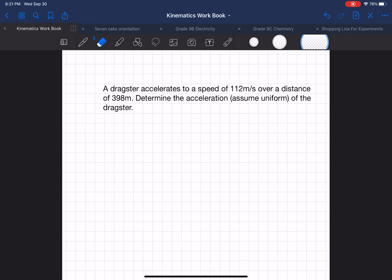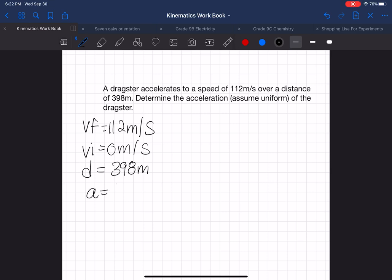The first thing whenever I get a question like this and I want to know which formula I can use, I want to write out all the components that I have or whatever I for sure have for values. So I know that the dragster accelerated to a speed of 112, so that's their final speed, so vf equals 112 m/s, and that means their initial speed must have been zero meters per second. And the dragster traveled a distance of 398 meters. We want to look for acceleration.